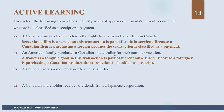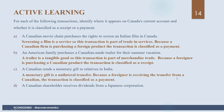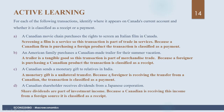In part C, a Canadian sends a monetary gift to relatives in India. This is a transfer from a Canadian resident to a non-Canadian resident, so it is classified as a payment — money leaving Canada — and is considered a unilateral transfer under the current account. In part D, a Canadian shareholder receives dividends from a Japanese corporation. This is an inflow — a Canadian receiving money from abroad — so dividends represent investment income for a Canadian resident, classified as a receipt under the current account.